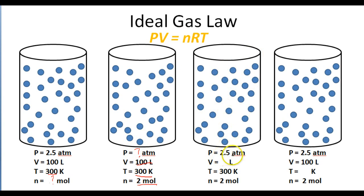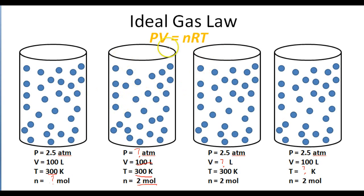In the third example, if you know the pressure, temperature, and number of moles but want to figure out the volume, you can plug these variables into the ideal gas law and calculate V. And in the last example, if you know pressure, volume, and number of moles, you can calculate the temperature. So the ideal gas law lets us figure out pressure, volume, temperature, or number of moles.